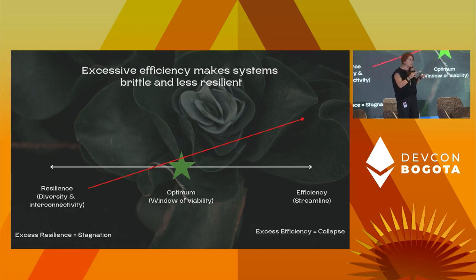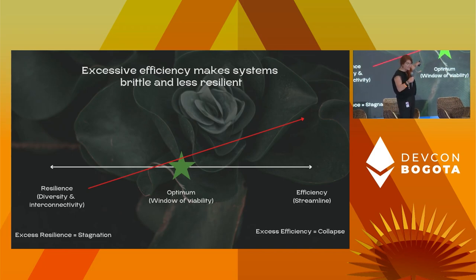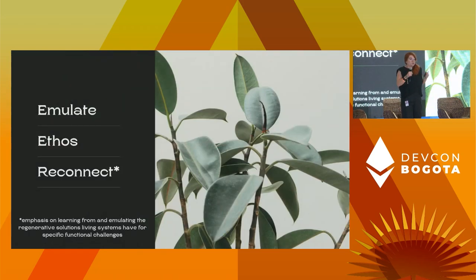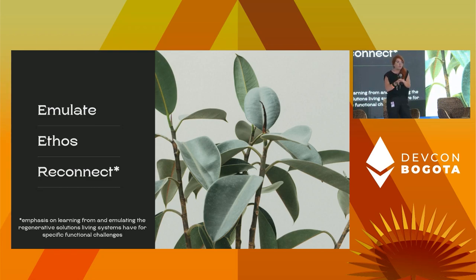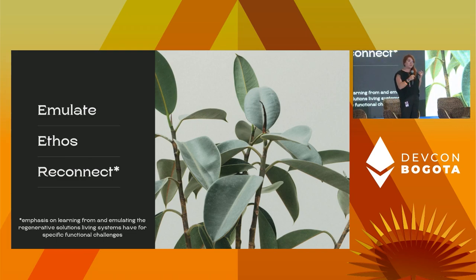What we do when we get to diversity is go straight to efficiency, completely bypassing the middle, completely bypassing the balance. Think austerity — that's what that is. We have a crash, some unstable situation, and we think we need to streamline immediately because that's what we've always done. Well, that is unnatural. This is the sweet spot. The window of optimum viability is in the middle. We have to emulate and get that ethos of balance, diversity, and efficiency sweet spot, and then reconnect.